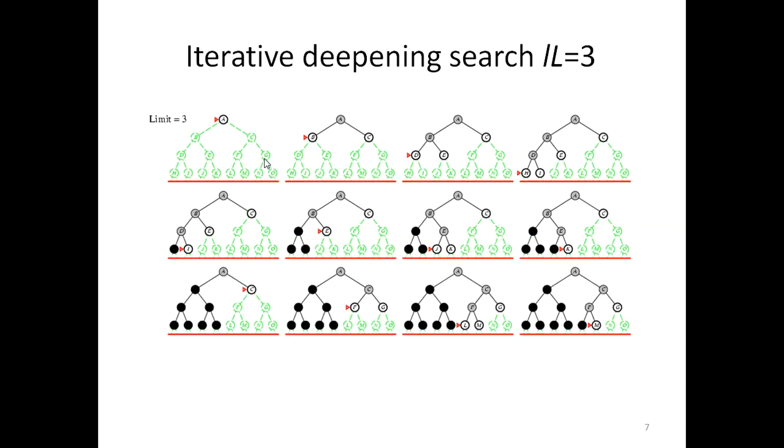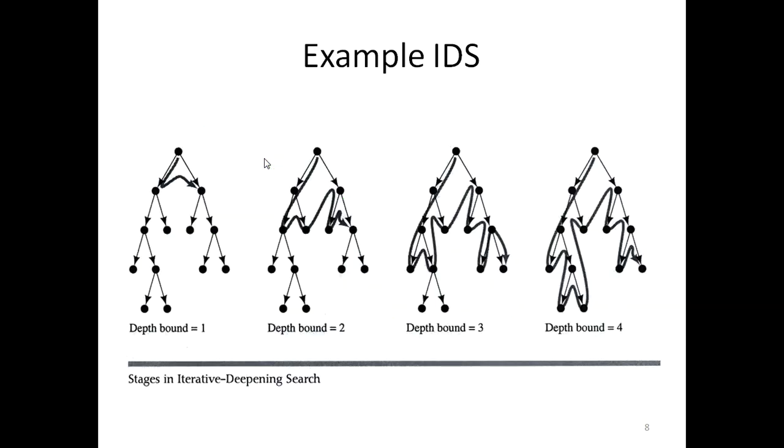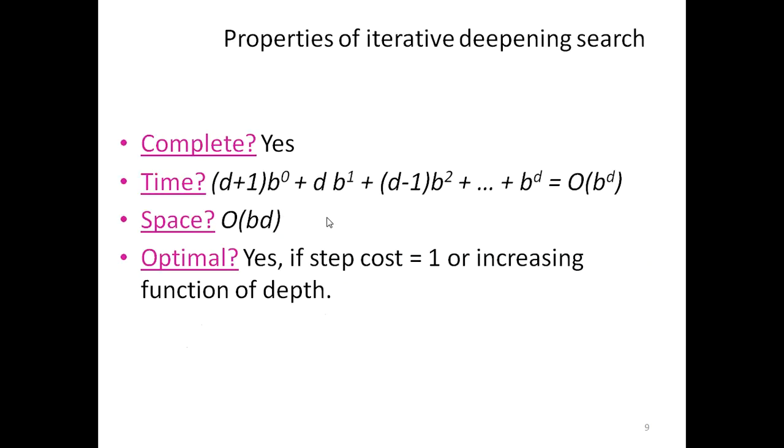Now level will be three, and again it will follow depth-first search up to limit three. It will keep continuing till we find the goal. So what we are doing is following limit one, then limit two—it's a combination of depth-first search and breadth-first search. We are getting both things: time efficiency as well as space efficiency. That's why IDDFS is more preferable over depth-first search and breadth-first search.